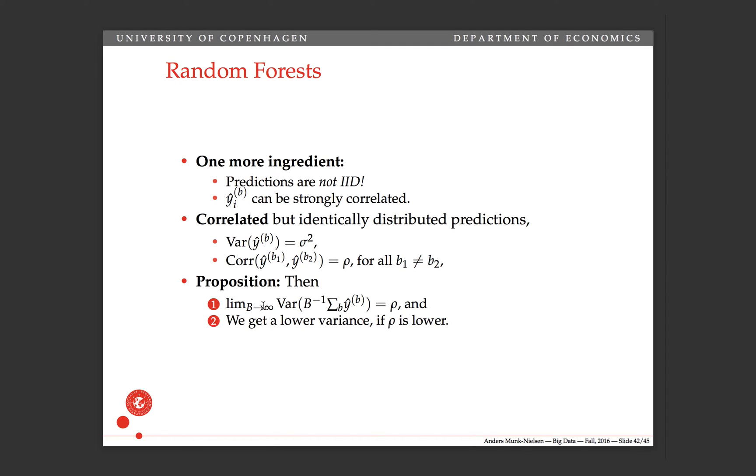Increasing the number of trees or the number of bootstrap samples is only going to help us so far. And secondly, we get a lower variance if the correlation is lower. And that's going to motivate us for picking random regressors to each of the different predictors in order to reduce their correlations and get a lower overall variance of our predictor.